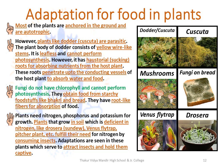Fungi do not have chlorophyll and cannot perform photosynthesis. They obtain food from starchy foodstuffs like bhakri and bread, and have root-like fibers for absorption of food. Plants need nitrogen, phosphorus and potassium for growth. Plants that grow in soil deficient in nitrogen — like the drosera, sundew, venus flytrap and pitcher plant — fulfill their need for nitrogen by consuming insects. Adaptations are seen in these plants which serve to attract insects and hold them captive. Fun fact: your hair also has a lot of nitrogen.